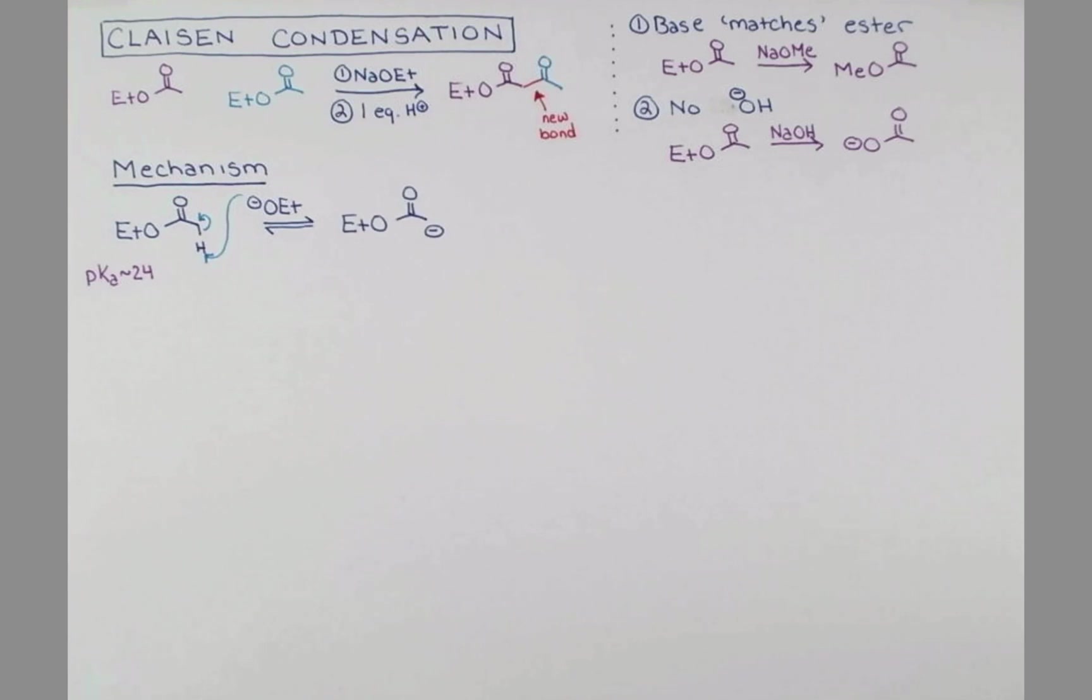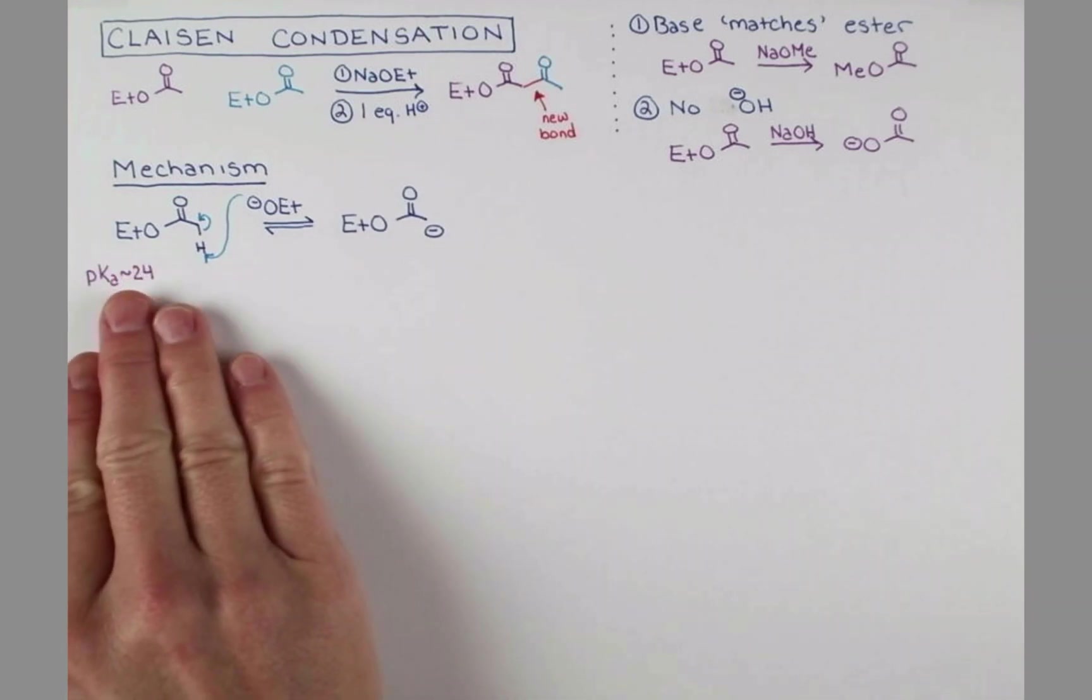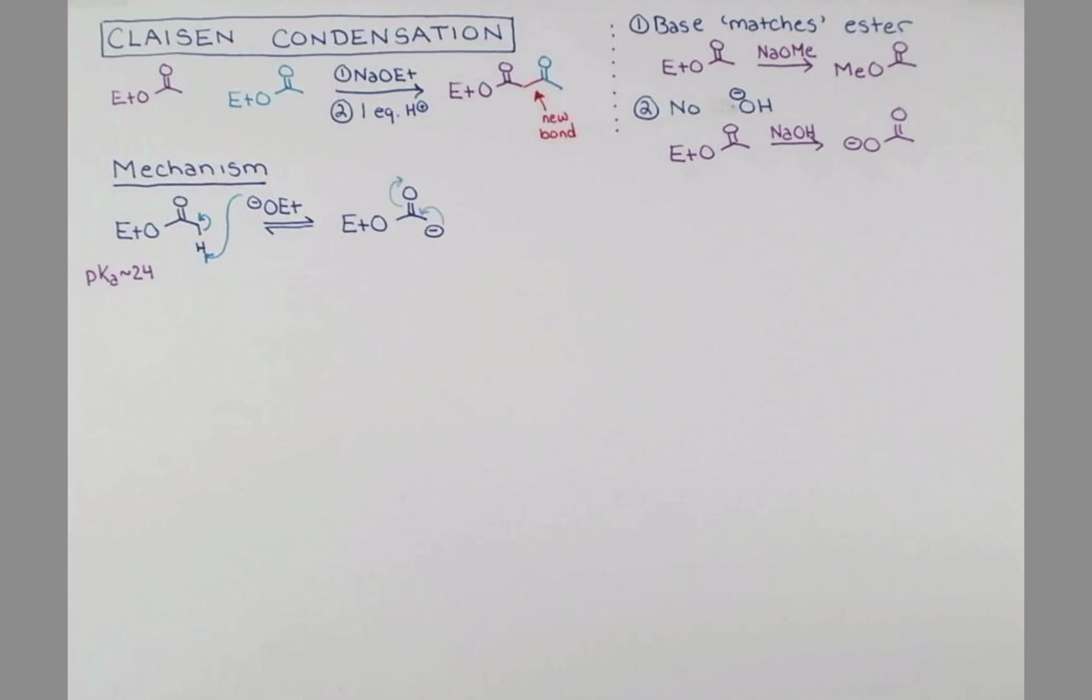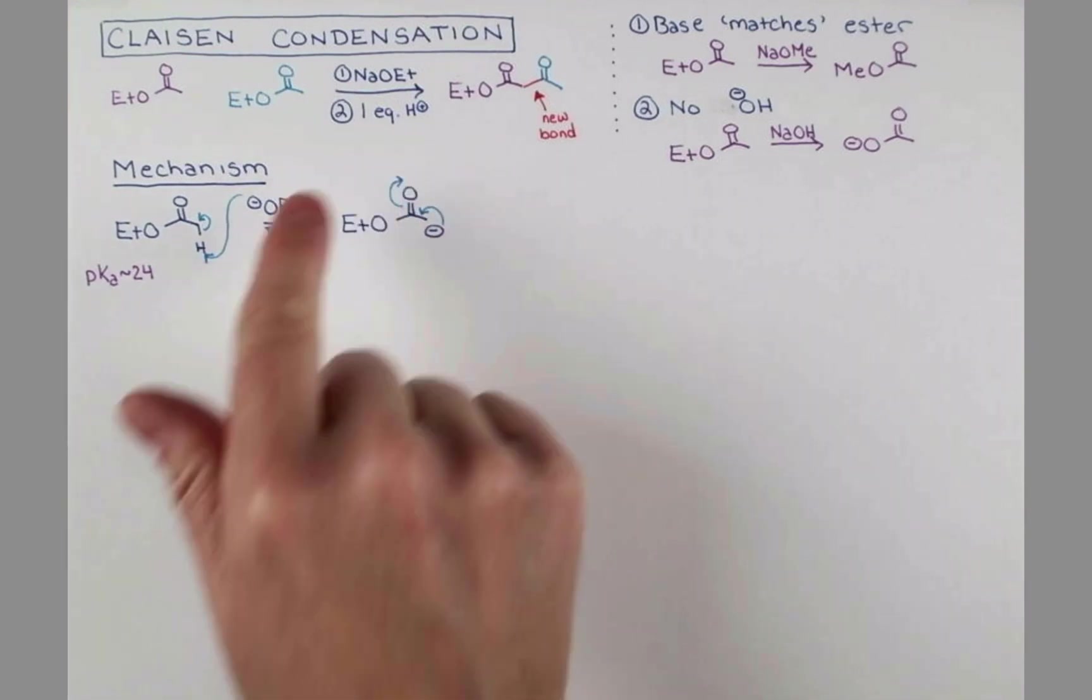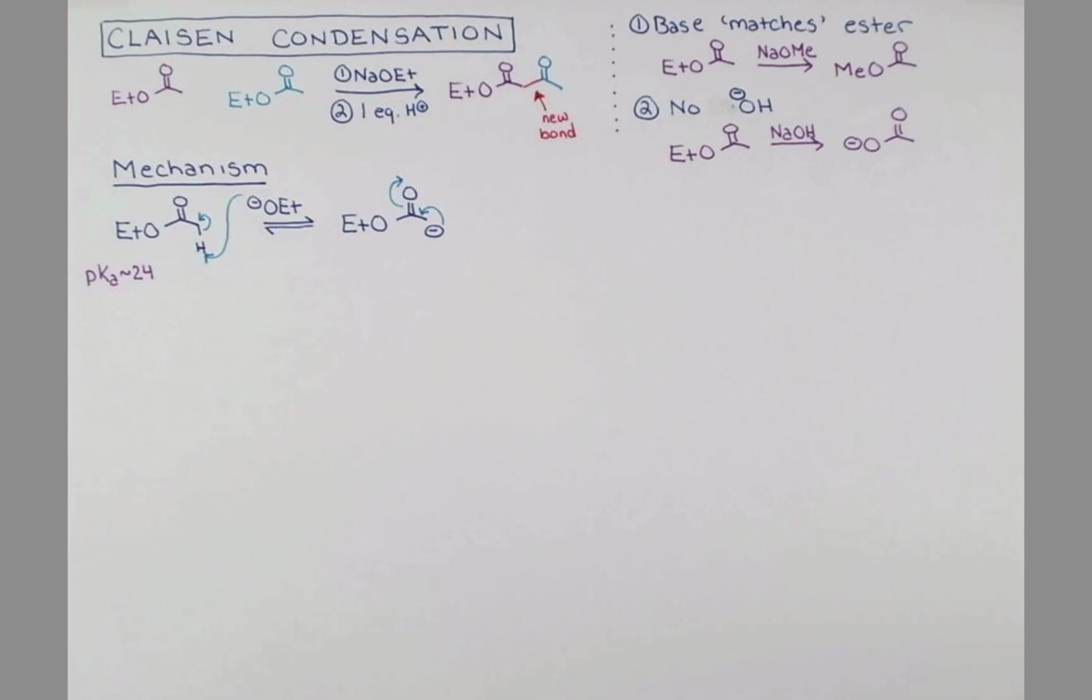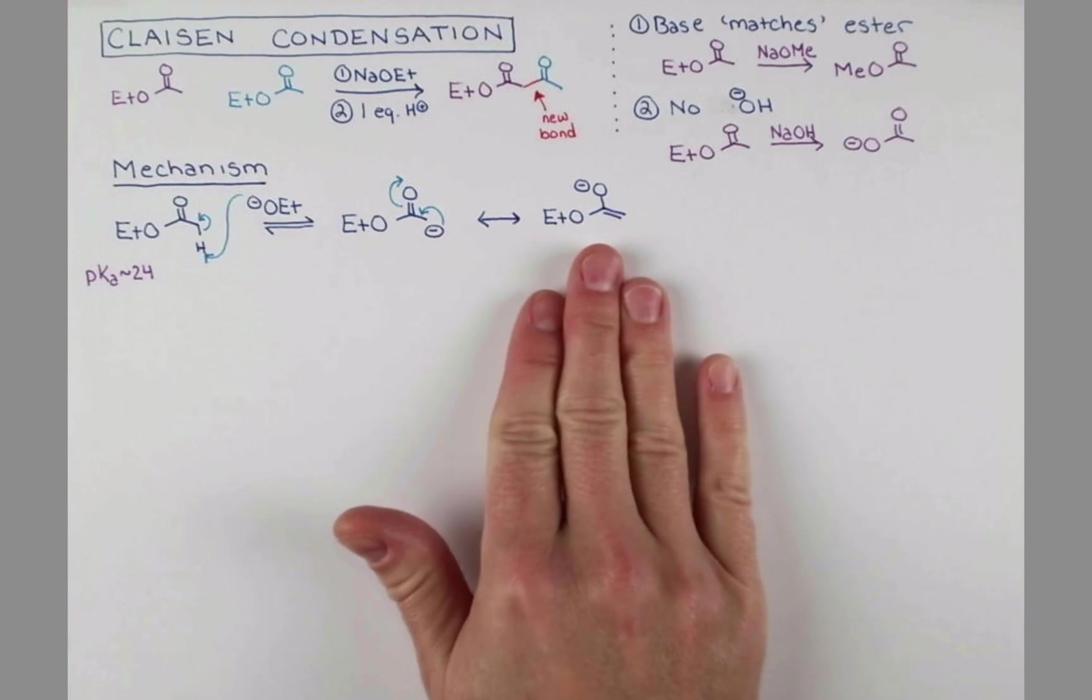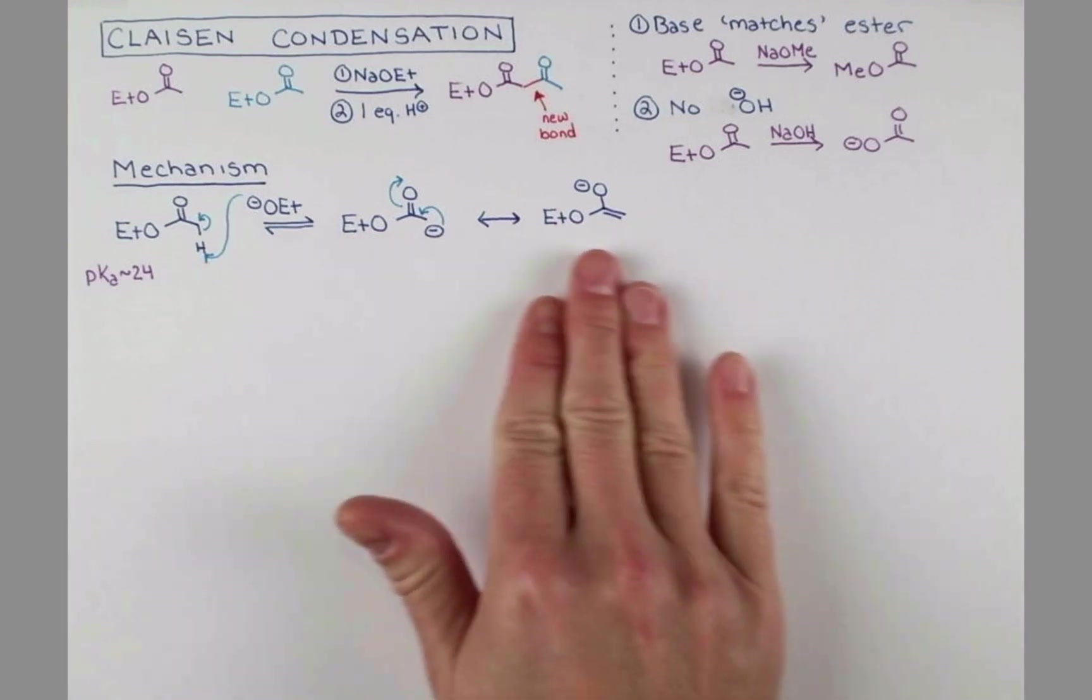So we're taking off this proton and these electrons that are left behind become a lone pair on carbon. This enolate has resonance and that's what makes this proton quite acidic in the first place. We can show our enolate with a carbon-carbon double bond here and push these electrons up onto oxygen.